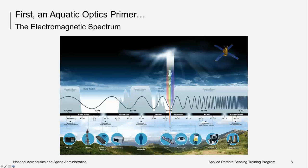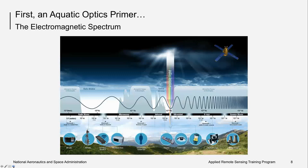The first step in any discussion of remote sensing requires an overview of the electromagnetic spectrum. Energy is emitted from the sun, and the photons travel at different wavelengths or different energy levels. For our purposes, we are mainly interested in light in the visible range, or 400 to 700 nanometers, and in the thermal range. Because of the absorption of light by water in the near and short wave infrared, we do not use those ranges for aquatic remote sensing.